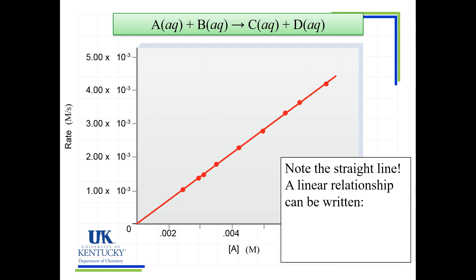When we monitor that, we can see this is a nice straight line — a linear relationship. We love linear relationships. When you have a linear relationship, we know that rate is directly proportional to its concentration.